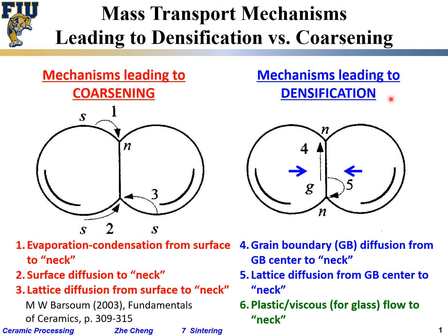A further mechanism not exactly plotted here is plastic or viscous flow to the neck. The material changes shape due to externally applied pressure, removing the porosities in between. So these three mechanisms — grain boundary diffusion, lattice diffusion, and plastic/viscous flow — are generally believed to lead to densification instead of just coarsening.